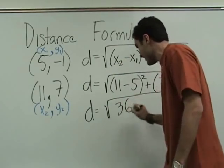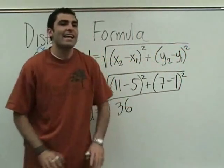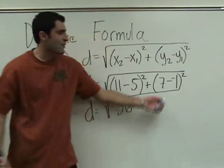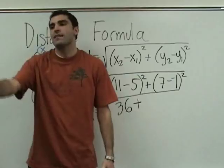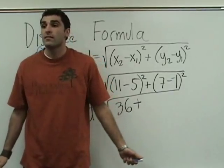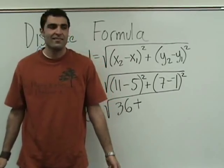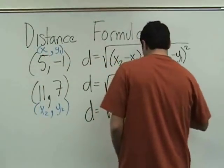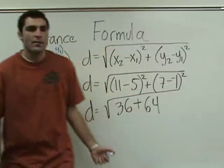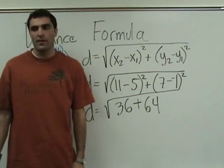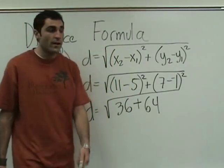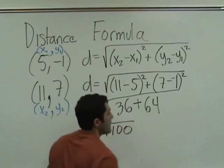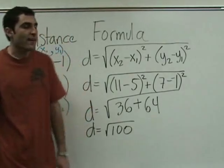36. Someone else do seven plus one? Eight squared is 64. So we have 36 plus 64, which is 100. And the answer is 10. The square root of 100 is, in fact, 10.